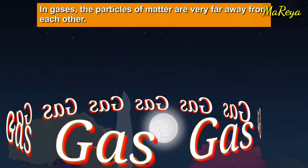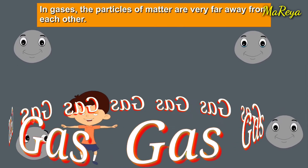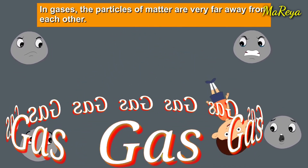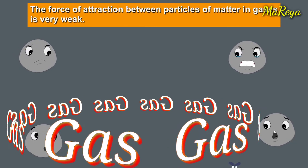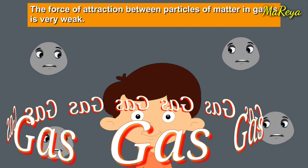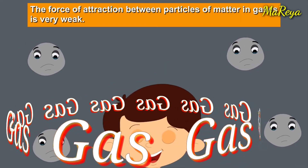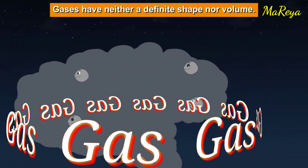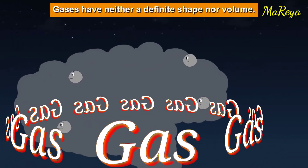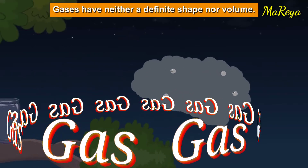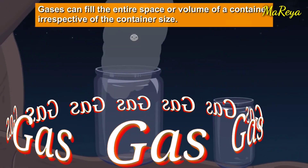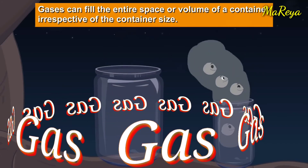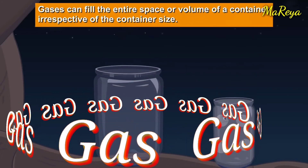In gases, the particles of matter are very far away from each other, and so the force of attraction between them is very weak. Thus, gases have neither a definite shape nor volume. They can fill the entire space or volume of a container irrespective of the container size.